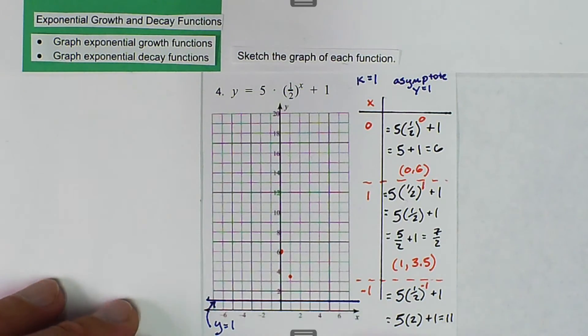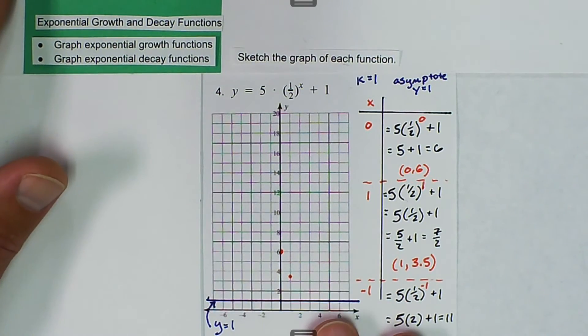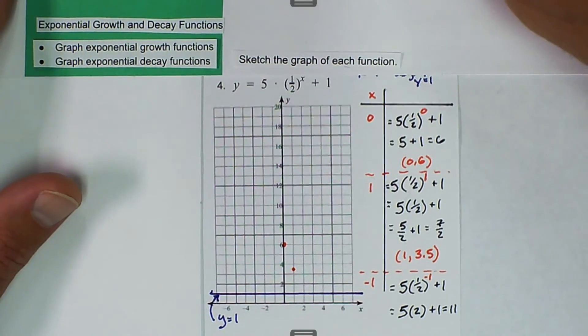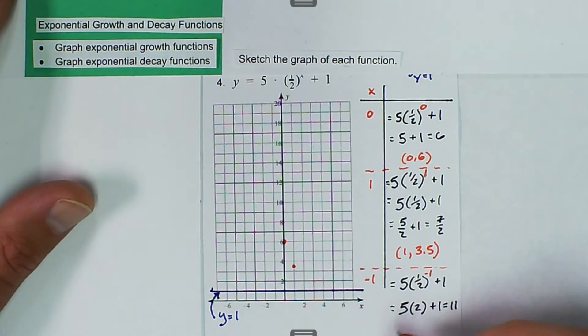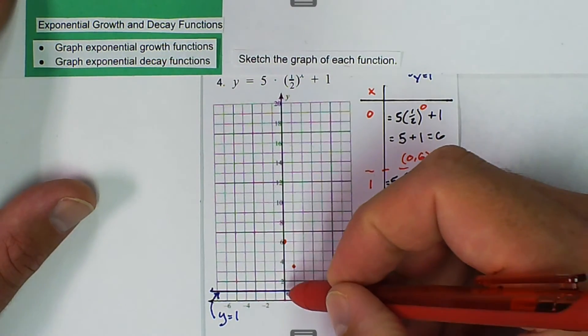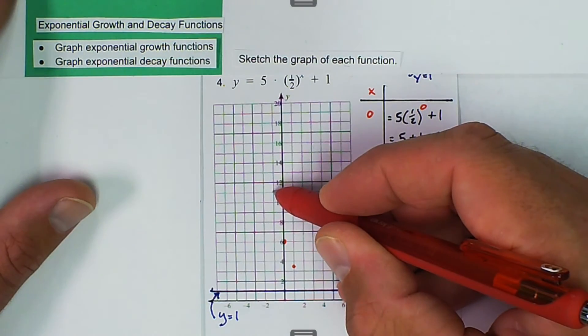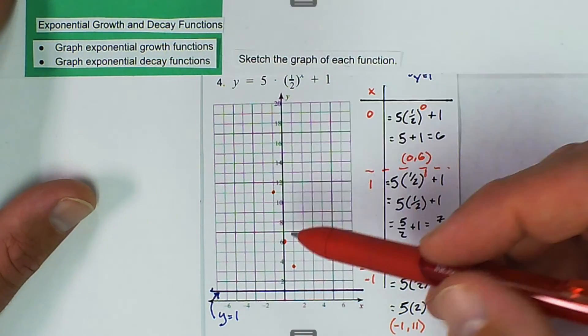And then we know that we get the ordered pair negative 1, 11. So I can graph that. Negative 1, 11. So we have those 3 points.